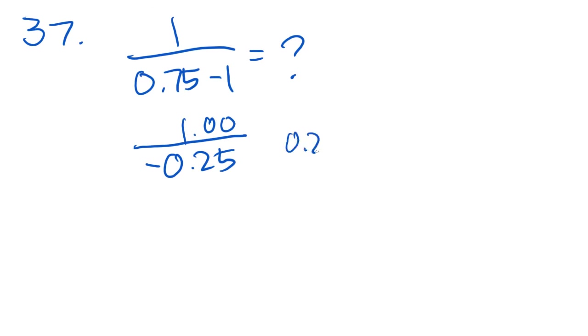37 says 1 over 0.75 minus 1 equal what? Well, right away, 0.75 minus 1, what is that? That is the same as saying negative 1.00 plus 0.75. And the answer is going to be negative 0.25. Up here, the 1 is the same as saying 1.00. So let's just divide.